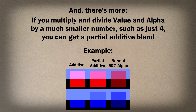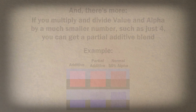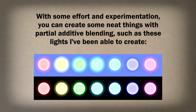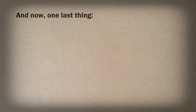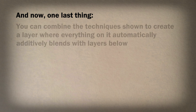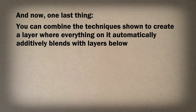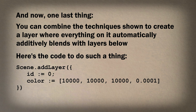Here's an example: on the left we have additive, and on the right we have normal 50% alpha. But in the middle we have a partial additive, where I multiplied and divided alpha by 4 instead of 1000. With some effort and experimentation, you can create some neat things with partial additive blending, such as these lights I've been able to create. You can also combine the techniques shown to create a layer where everything on it automatically additively blends with layers below — here's the function.